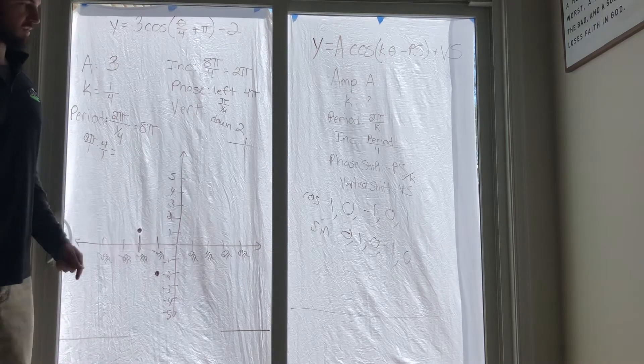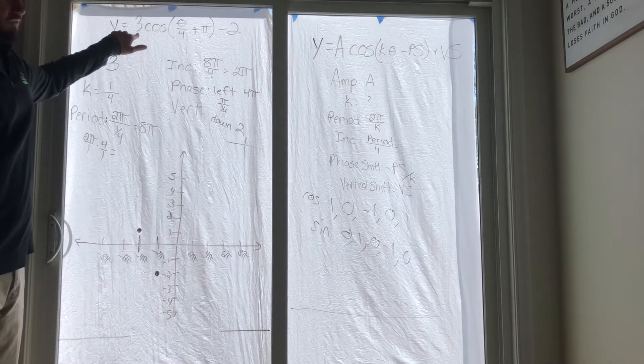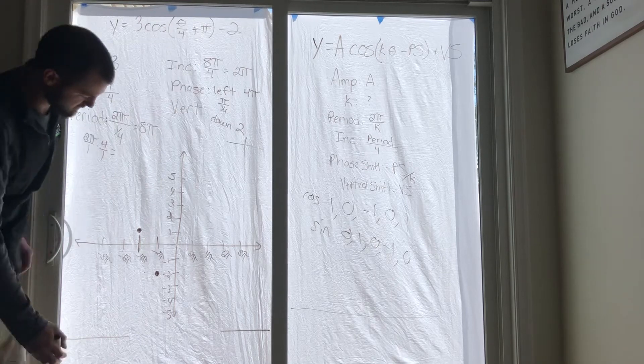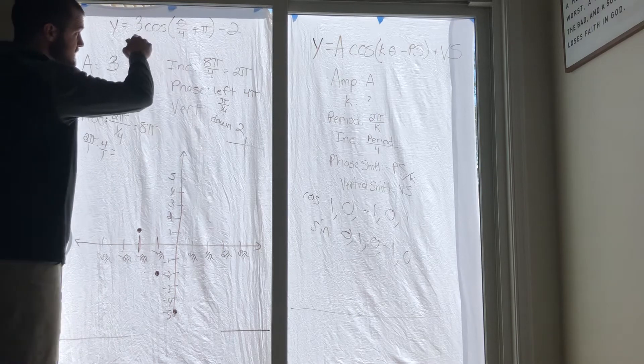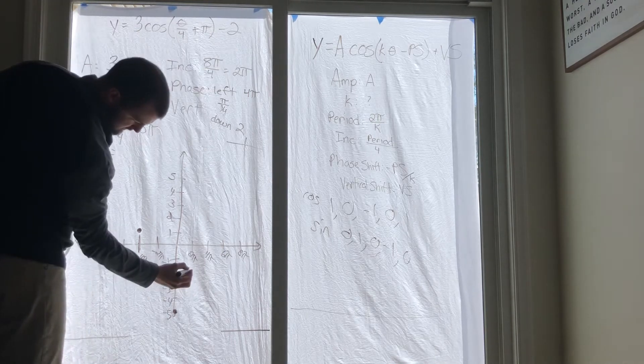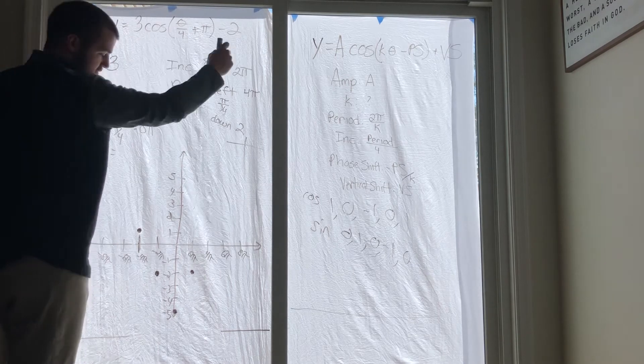And then 0 times 3 minus 2 is negative 2, and then 1 times 3 is 3, minus 2 is 1. Now you kind of run out of numbers here, but you can keep going - either use the pattern that you got or keep going with the values.